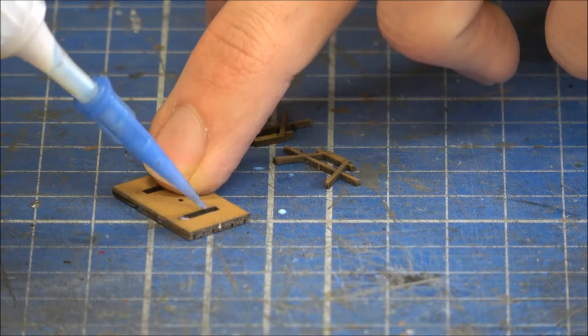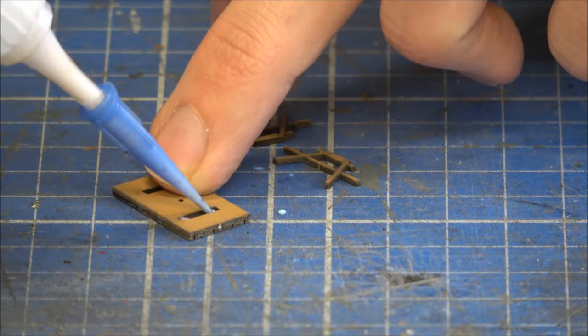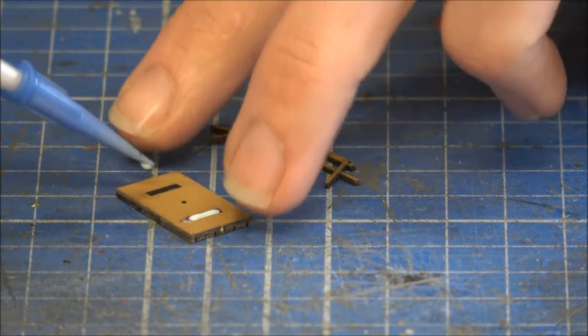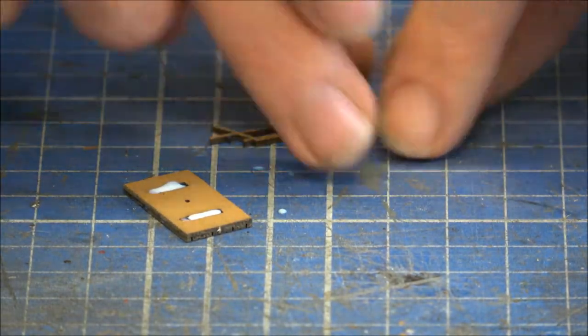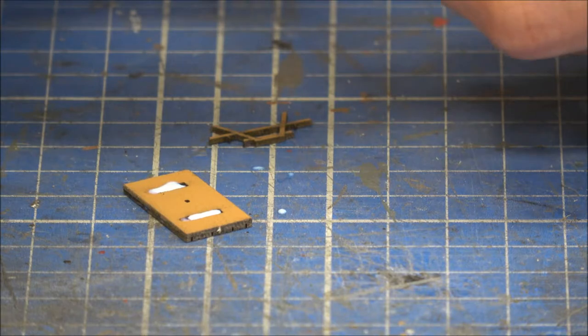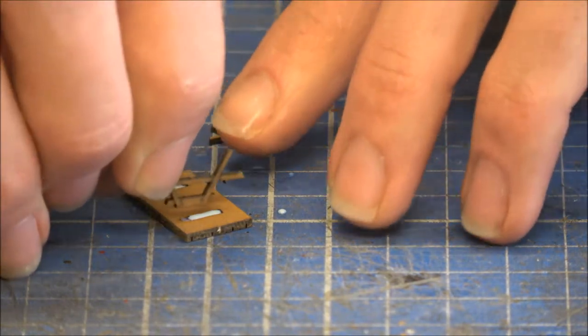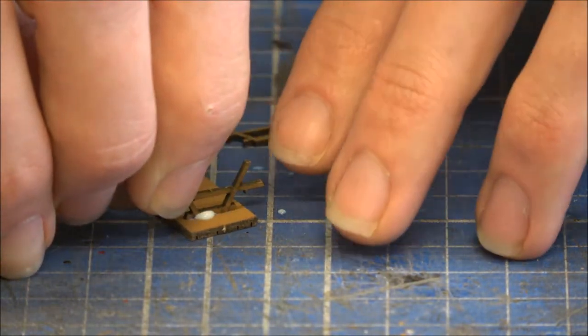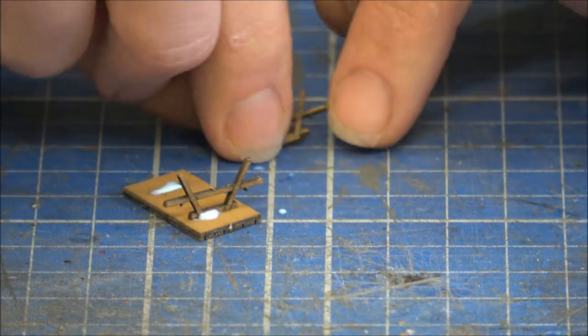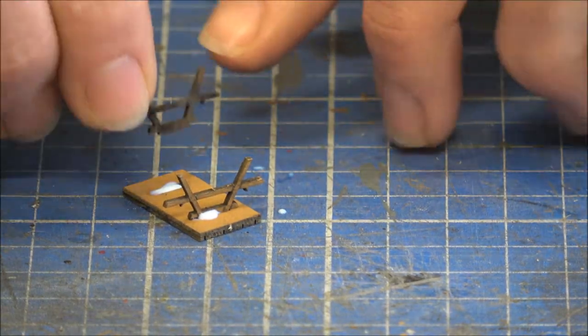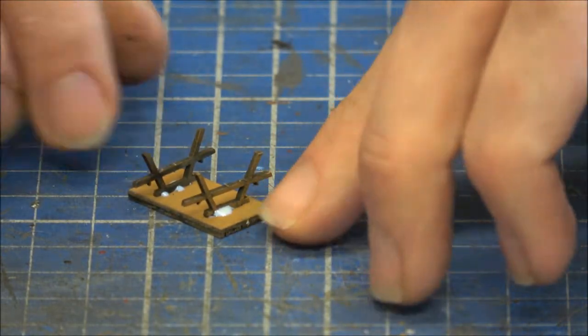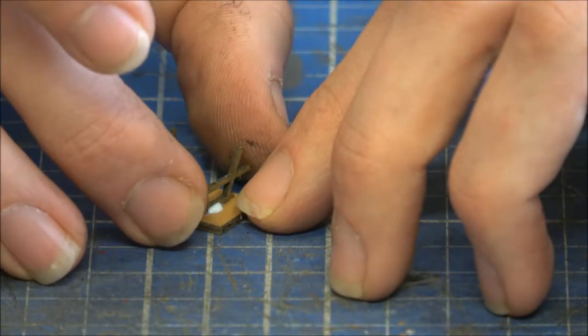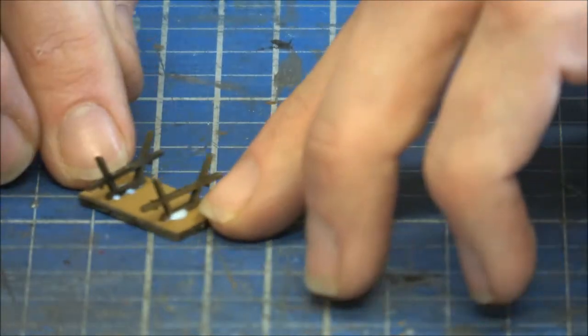So with the Rocket glue, I'm just going to put a little bit in each of those little slots. And then put the legs in, making sure I've got them the right way around. The detail bits on the outside. And the other one. And I'm just going to leave that to one side just to dry out.